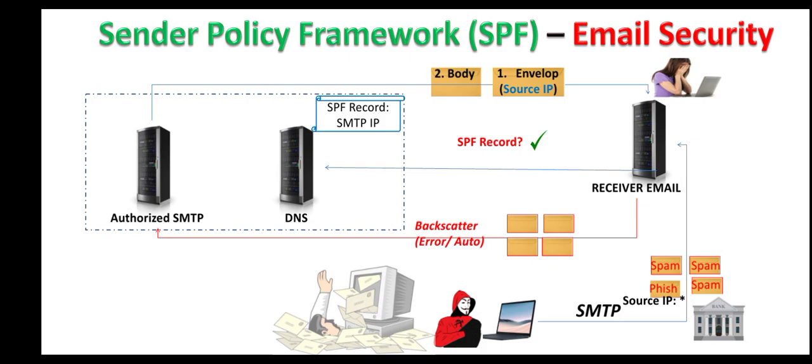These automatic or erroneous messages go to the actual domain, creating a lot of spamming or backscattering effect on that domain. Once a domain publishes its SPF record and declares its authorized mail server IP address, the receiving email system does not send such automatic messages to that domain, even if its address appears in a spamming email.